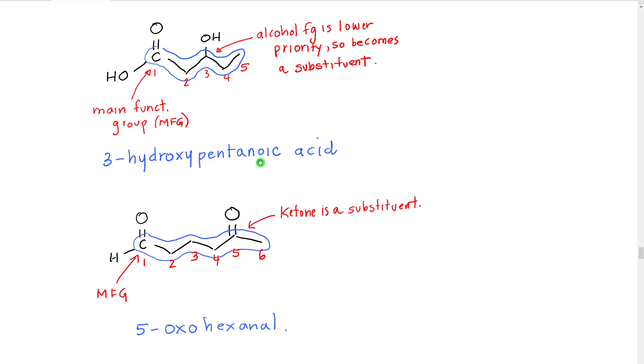We drop the e. We put the ending on for the main functional group, oic acid, and then we put the name of the hydroxy, or the alcohol substituent, in front with the number where it's attached, so 3-hydroxypentanoic acid.